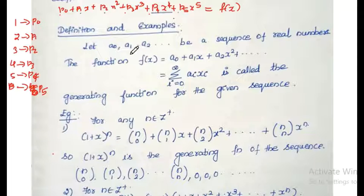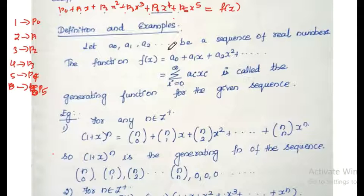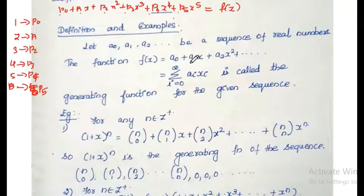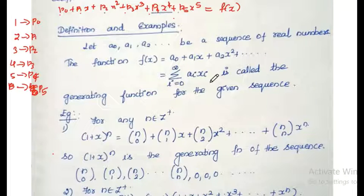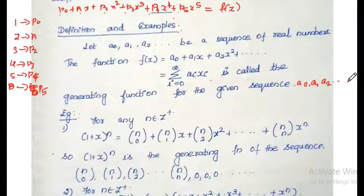Let us take the sequence of real numbers to be a0, a1, a2, a3, a4, and so on — a sequence of real numbers. Then the function f(x) = a0 + a1·x + a2·x² + a3·x³, and so on. This can be represented as the summation where i varies from 0 to infinity of aᵢ·xⁱ, which is called the generating function for the given sequence a0, a1, a2, and so on. This is the generating sequence — it is the basic definition.